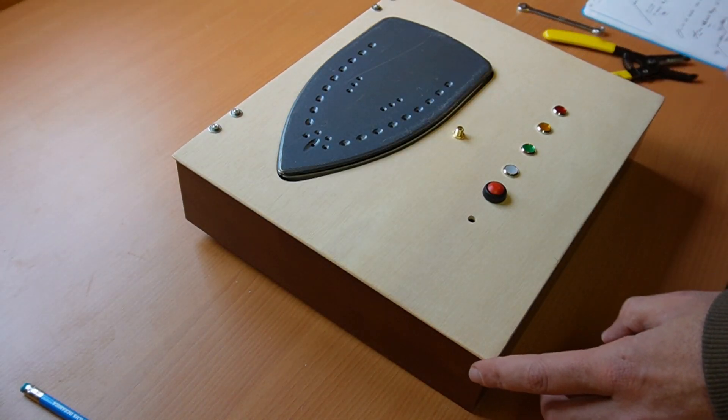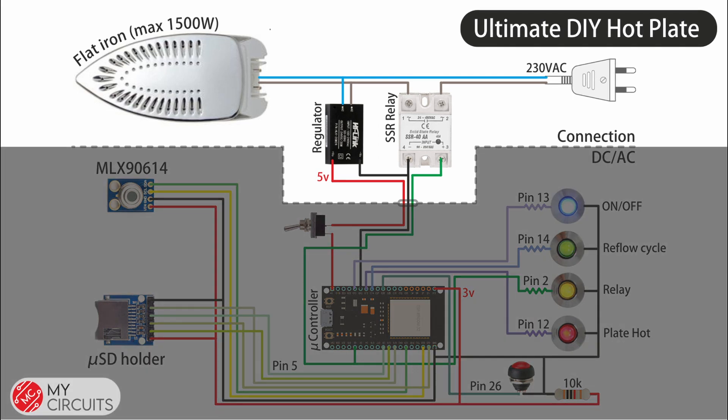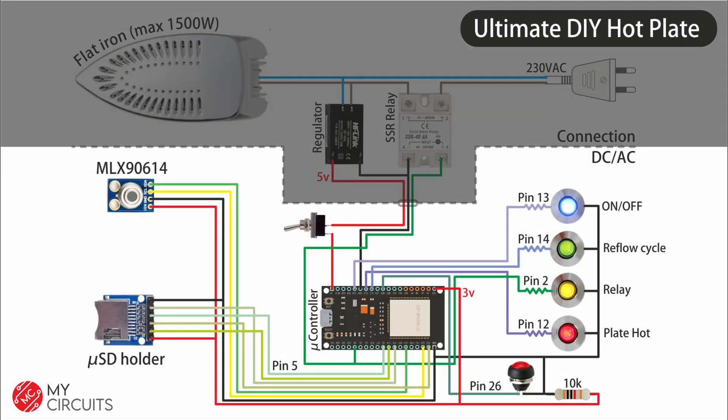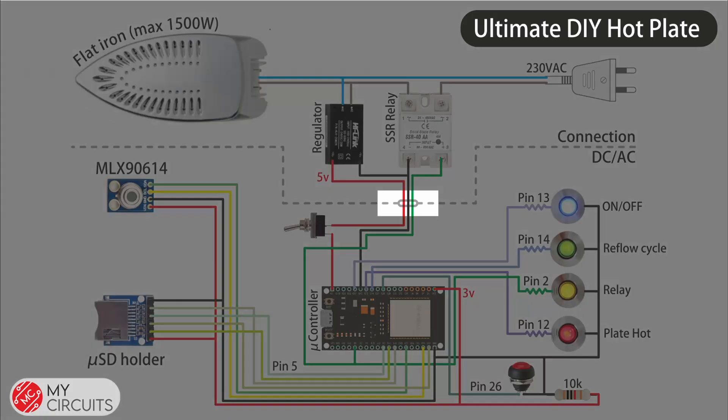The box already looks amazing, but we need to mount all the electronics. The electrical connections are simple, but we have to safely install everything to ensure the durability. I'm going to separate the AC circuit from the DC circuit by installing the AC in the bottom of the box and the DC circuit in the top cover. Both circuits will be connected by a small pin connector.